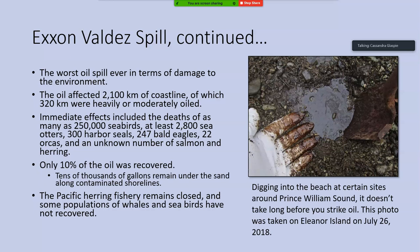Only 10% of the oil was ever recovered in cleanup, so tens of thousands of gallons still remain in the environment. If you take a shovel out and dig at certain sites in Prince William Sound, you can still find oil pooled underneath the sand. There's a natural process by which oil disappears, but over time the easy-to-degrade parts get worn down and it gets harder and harder to remove what remains.